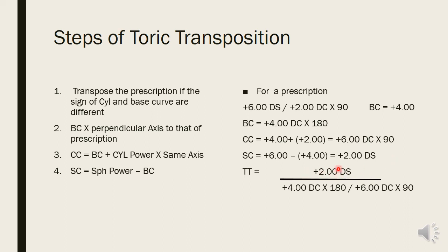The toric transposition is written as: plus two (sphere curve) / plus four at 180 (base curve), plus six at 90 (cross curve). When you plot this on a cross, you can verify it gives the same prescription: the difference between plus four and plus six = two diopters of cylinder, confirming the original prescription.